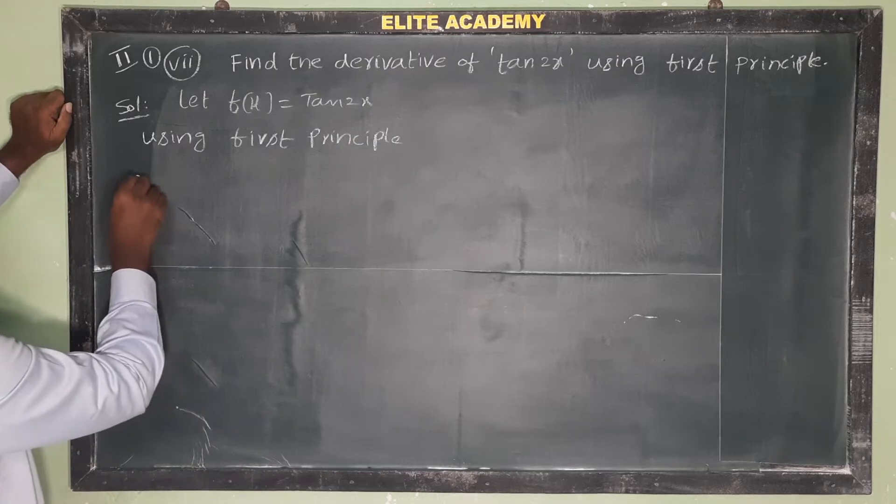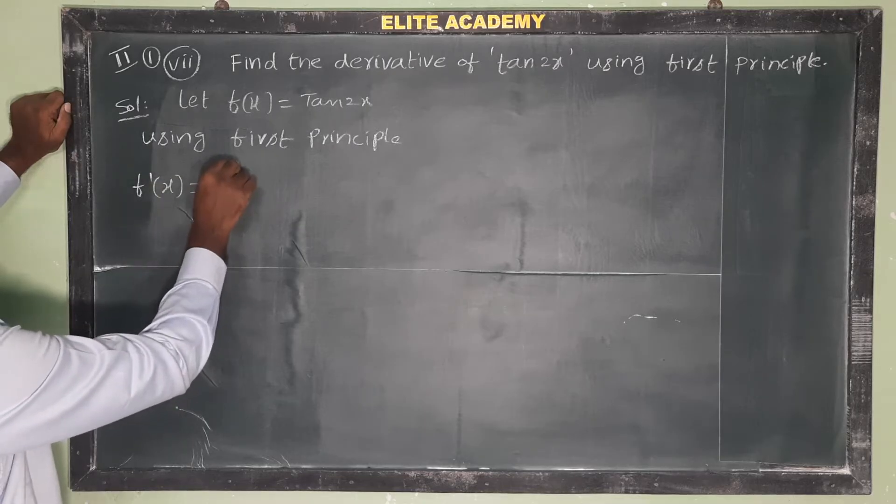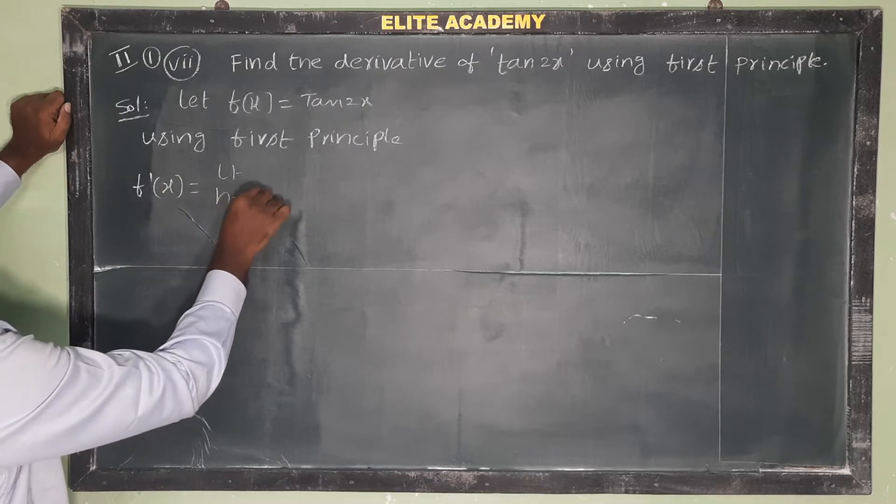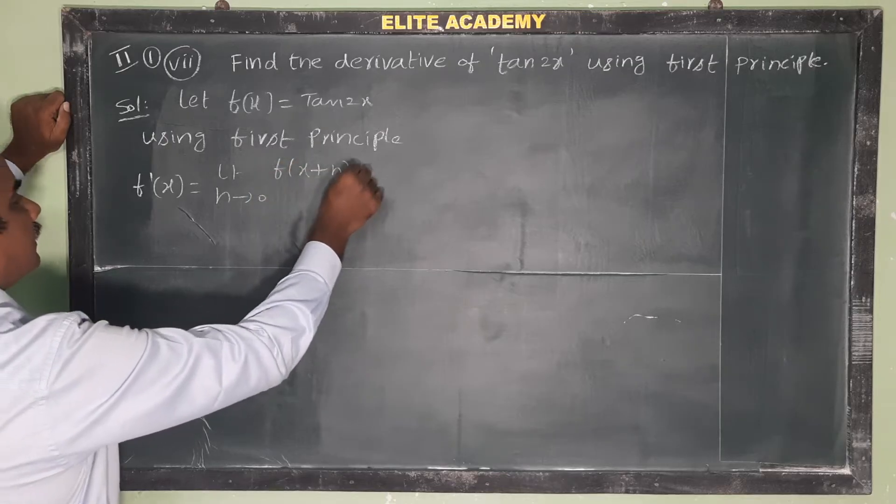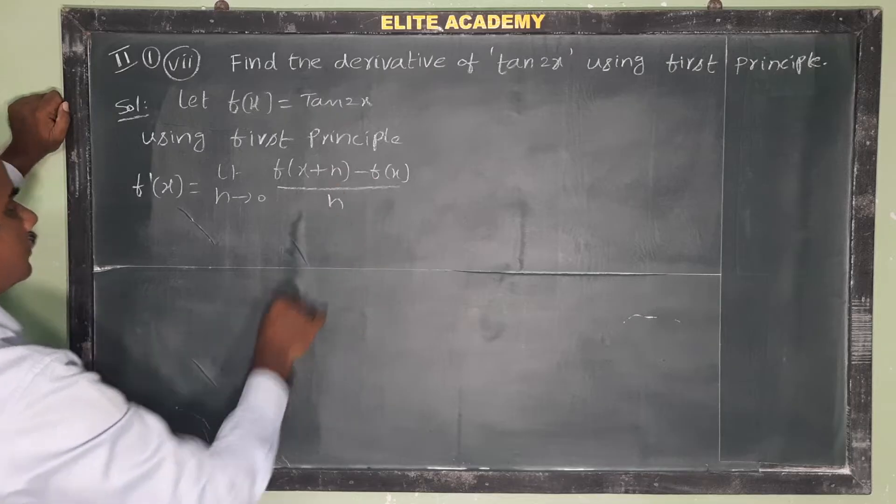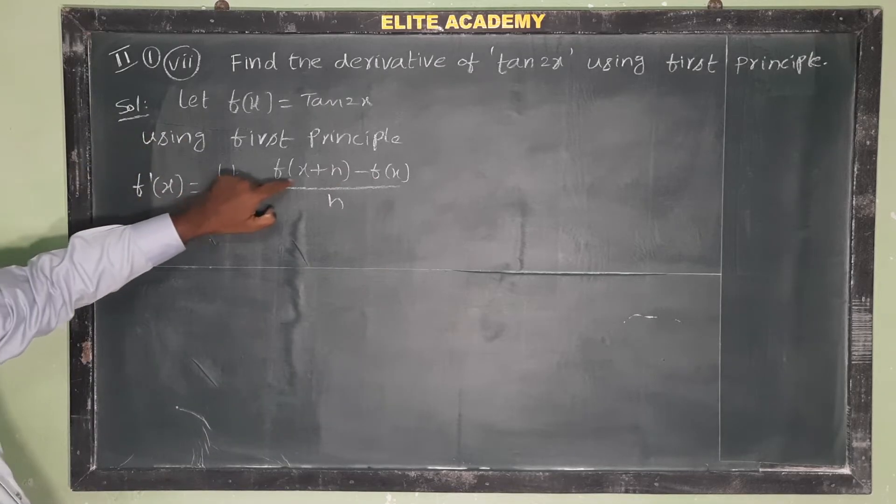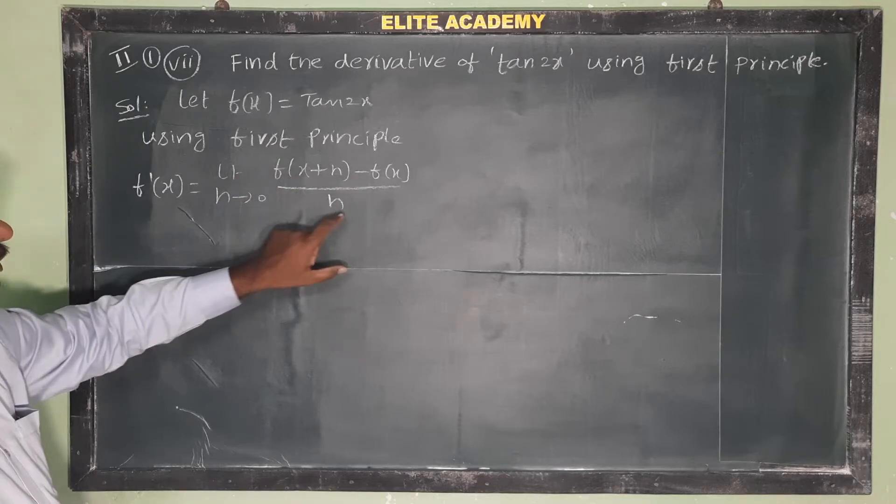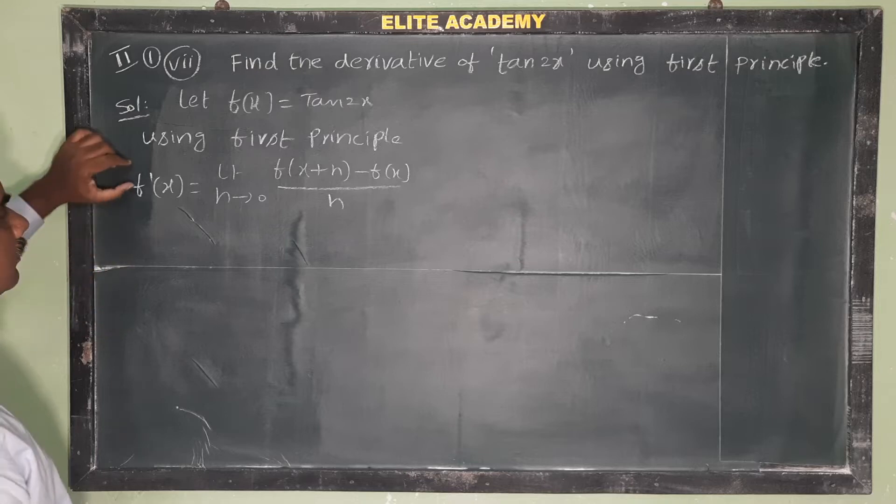First principle formula: f'(x) is equal to limit h tends to 0, f(x plus h) minus f(x) by h. So f'(x) equals limit h tends to 0, f(x plus h) minus f(x) by h. This is called the first principle of derivative.